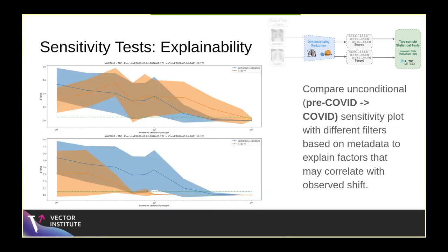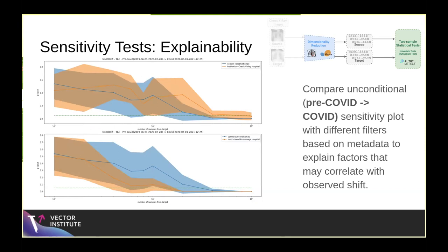As an extension to those experiments, we thought explainability would make sense — taking the same pre-COVID to COVID experiments but doing a conditional sensitivity test based on the metadata instead of an unconditional one. These two plots show the control line from the previous plot for pre-COVID to COVID, and then the orange line represents whether the patient is an ICU patient or not. For non-ICU patients (is_ICU = false) versus ICU patients (is_ICU = true), you can see a considerable shift in the number of samples required to produce a statistically significant result. The is_ICU = true metadata category correlates well with the shift from pre-COVID to COVID.